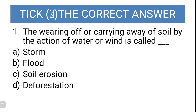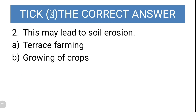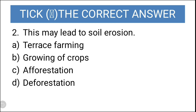The correct answer is soil erosion. The wearing off or carrying away of soil by the action of water is called soil erosion. Next question: this may lead to soil erosion — terrace farming, growing of crops, afforestation, or deforestation? Deforestation might lead to soil erosion.